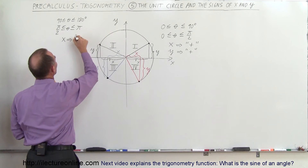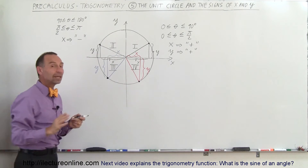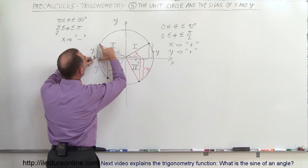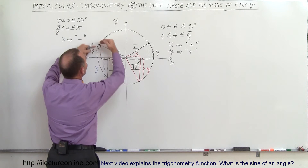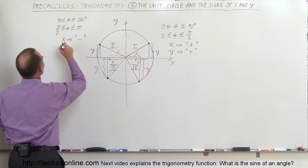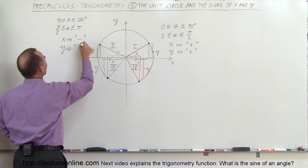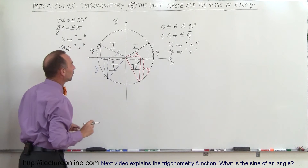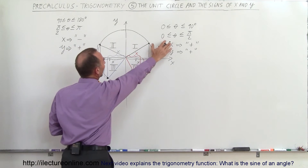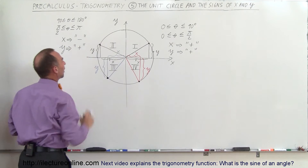So x is equal to a negative value in the second quadrant, but the y-value is still positive because it's above the x-axis — that's a positive value. So in quadrant 1, x and y are positive; in quadrant 2, x is negative and y is positive.